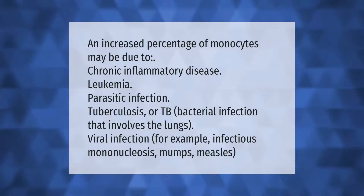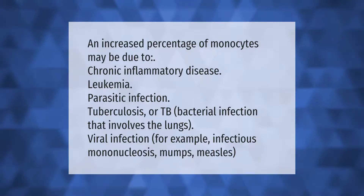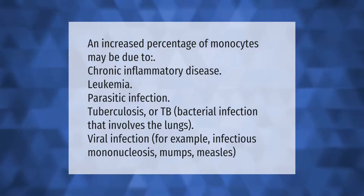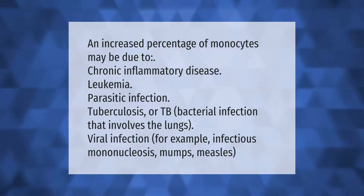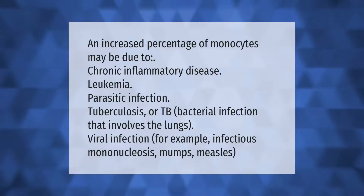Causes of increased monocytes include chronic inflammatory disease, leukemia, parasitic infection, tuberculosis (TB), bacterial infection involving the lungs, and viral infections such as infectious mononucleosis, mumps, and measles.